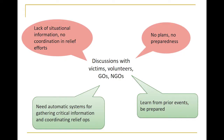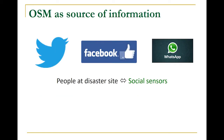They also said we need to learn from prior events — how can one be prepared during these disasters? So we have started proposing the use of online social media as a source of information. We have talked about different kinds of sensors; here, in the case of social media, it's the people being used as social sensors.